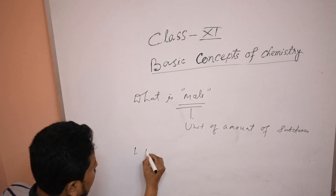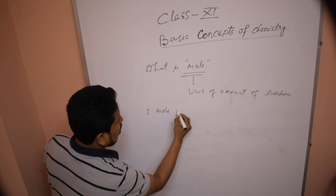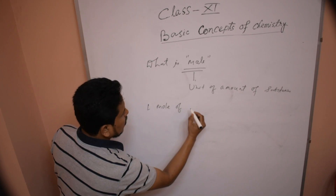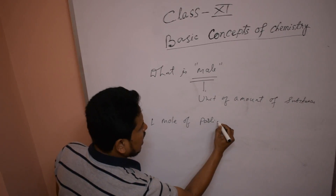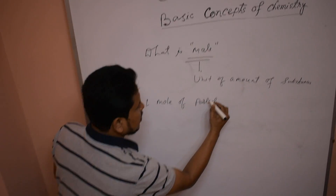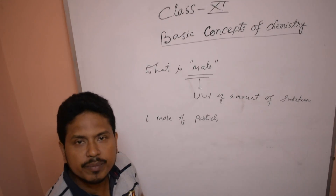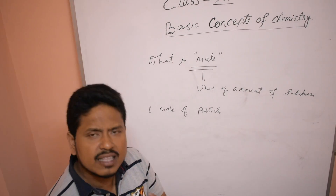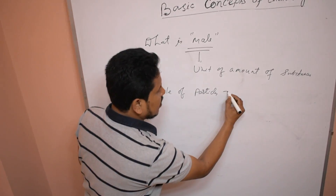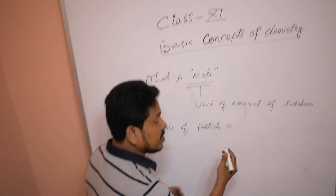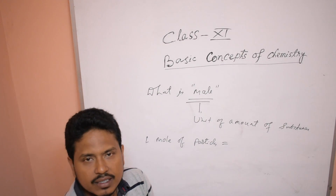One mole of any particles — it may be anything: it may be atoms, it may be molecules, it may be ions, or anything else. One mole of particles indicates a definite amount of those particles.